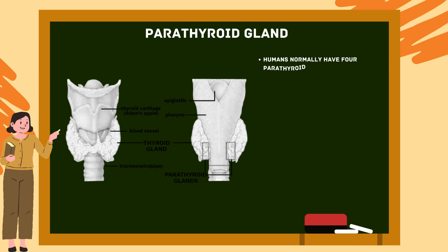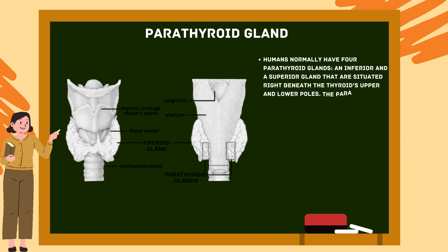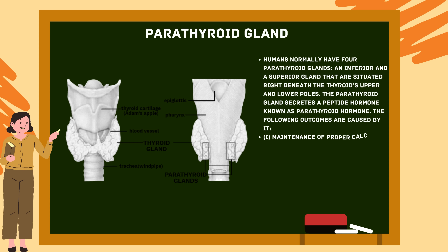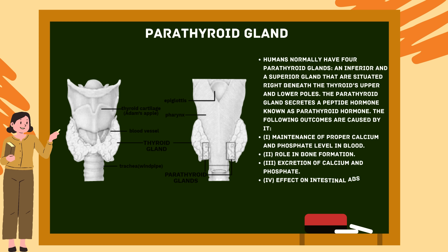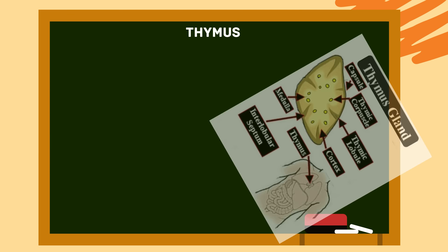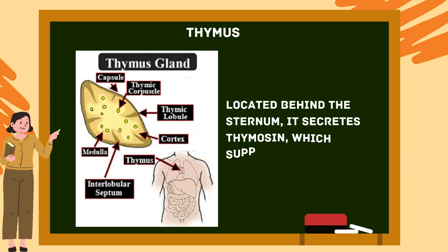Parathyroid gland: Humans normally have four parathyroid glands — an inferior and a superior gland situated right beneath the thyroid's upper and lower poles. The parathyroid gland secretes a peptide hormone known as parathyroid hormone (PTH). Its functions include: (1) maintenance of proper calcium and phosphate levels in blood, (2) role in bone formation, (3) excretion of calcium and phosphate, and (4) effect on intestinal absorption of calcium, phosphate, and vitamin D.